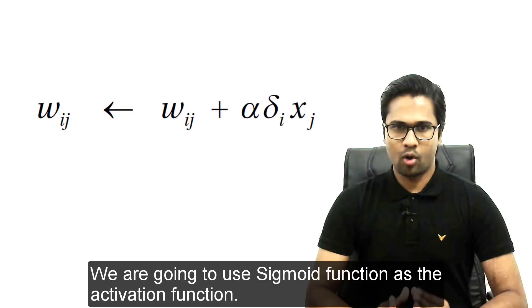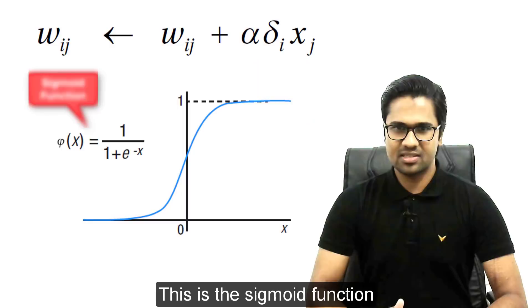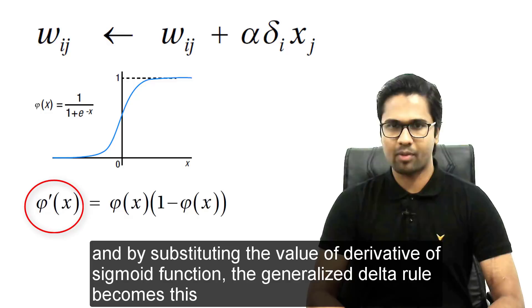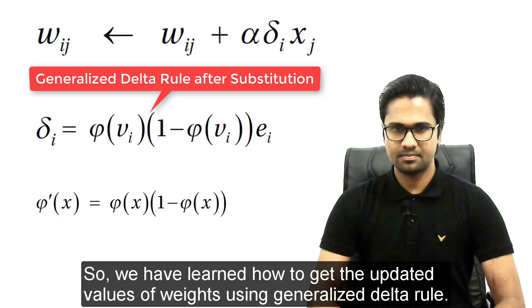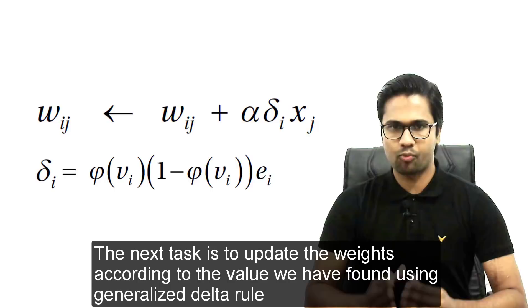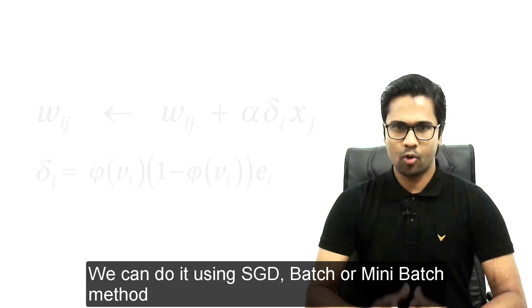We are going to use the sigmoid function as the activation function. The first derivative of the sigmoid function has a known form. By substituting the derivative of the sigmoid function, the generalized delta rule takes a specific form. We have now learned how to get the updated value of weights using the generalized delta rule.